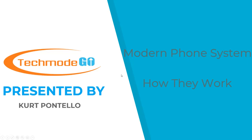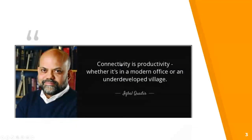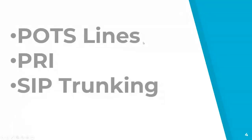To first understand the modern telephone system, we need to understand what options are available to us as consumers. Our agenda for today's webinar is we're going to be discussing the different types of connections that are available to us and how they interact with the modern telephone system. Connectivity is productivity whether it's in a modern office or in an undeveloped village. The three things we're going to be discussing today are POTS telephone lines, PRI, and SIP trunking.